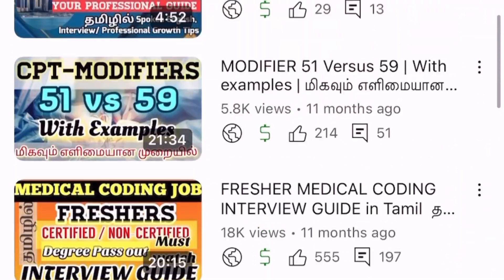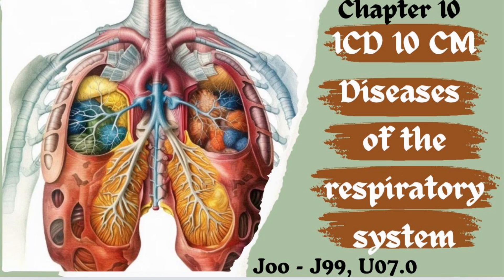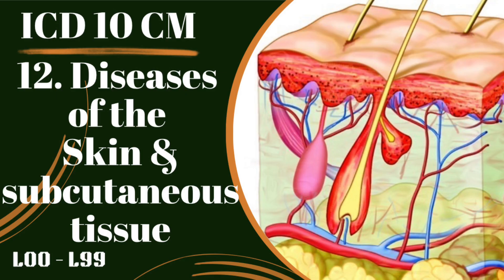In my last video I already posted Chapter 10, which is Diseases of the Respiratory System, J00 to J99. My previous ICD-10-CM videos cover up to Chapter 10, so if you haven't watched those, I'll put the link in the description box below. Note there is no Chapter 11 guideline — the digestive system K00 to K95 series has no specific guidelines for choosing codes, hence no guidelines for that chapter.